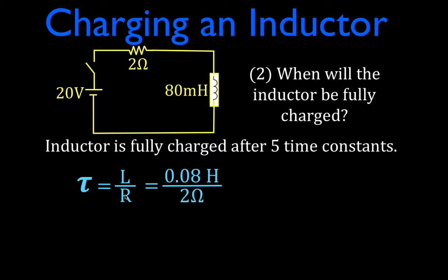We have an 80 millihenry, that's 0.08 henry divided by 2, and that gives us 0.04 seconds, which is 40 milliseconds. We're going to multiply that by 5 because it's 5 time constants. That's when we consider the inductor to be fully charged, the same thing we had with an RC circuit after 5 time constants. The capacitor is fully charged.